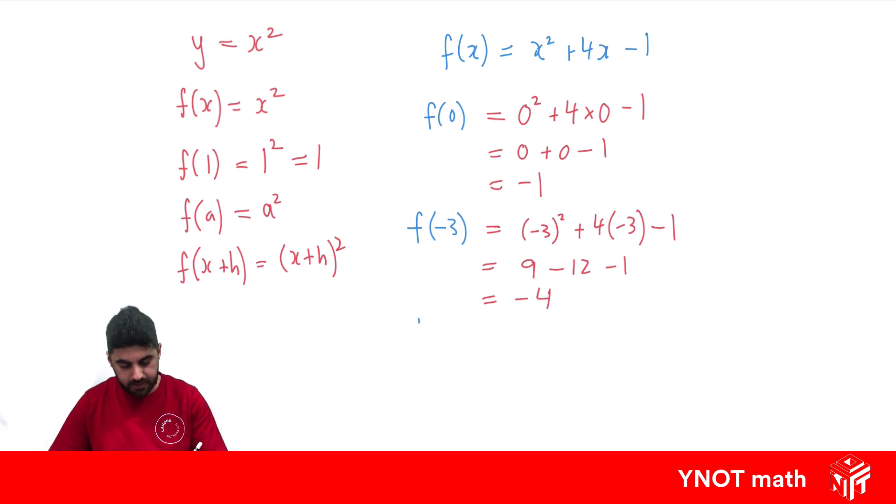What about the f of b? Where I see x, I just replace with a b. So we get b squared plus 4b minus 1.